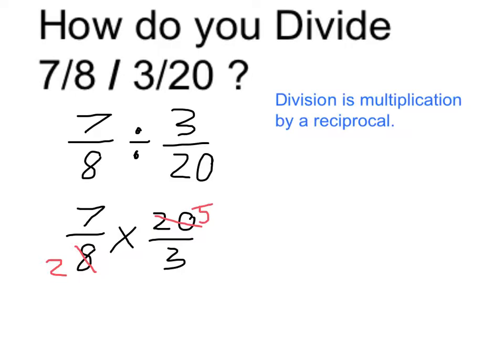Next, I multiply top times top, numerator times numerator, and denominator times denominator. So 7 times 5 is 35, 2 times 3 is 6. My answer is 35 6ths.